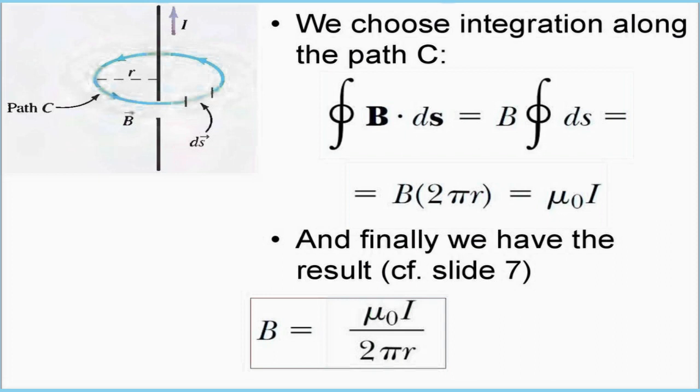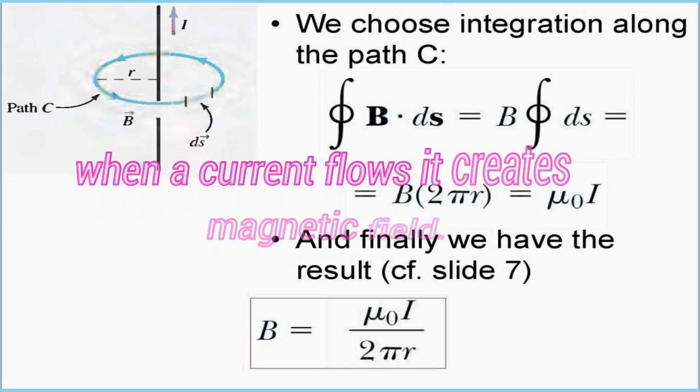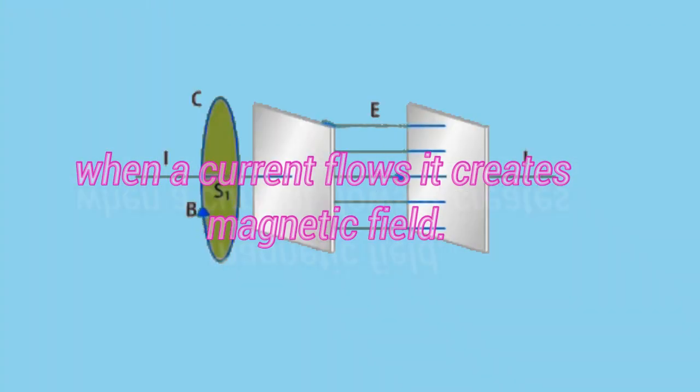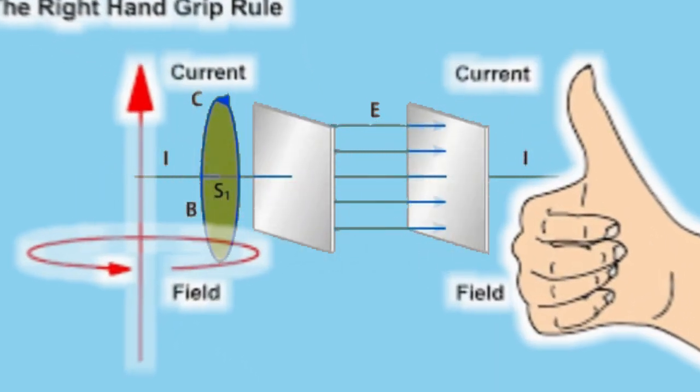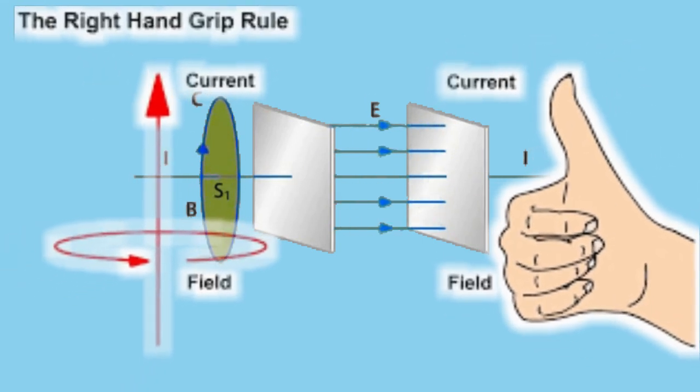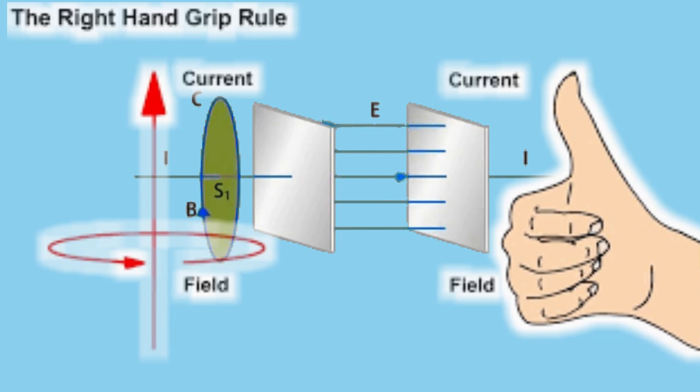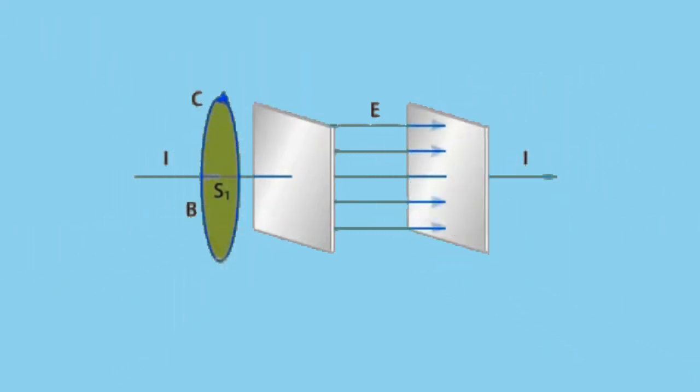So in the Ampere's law you know that Ampere's law states that when a current flows through a conductor it creates magnetic field which can be known by which you can calculate the direction of the magnetic field by the right hand grip rule that your thumb is indicating the direction of current and the curl of your fingers are showing the direction of magnetic field.